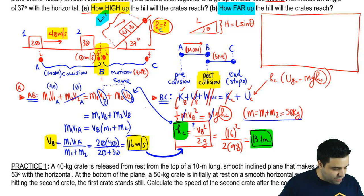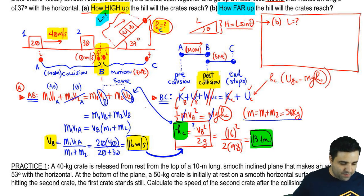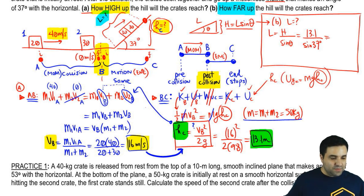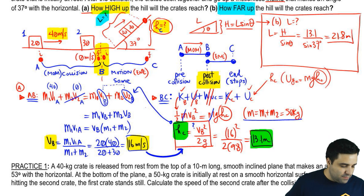In fact, we have just talked about part b here. If I want to know how far up I want to know l, I can use this equation right here. L equals h divided by sine of theta. H, we just got over here. It's 13.1 divided by the sine of 37. And this means that l is 21.8 meters.